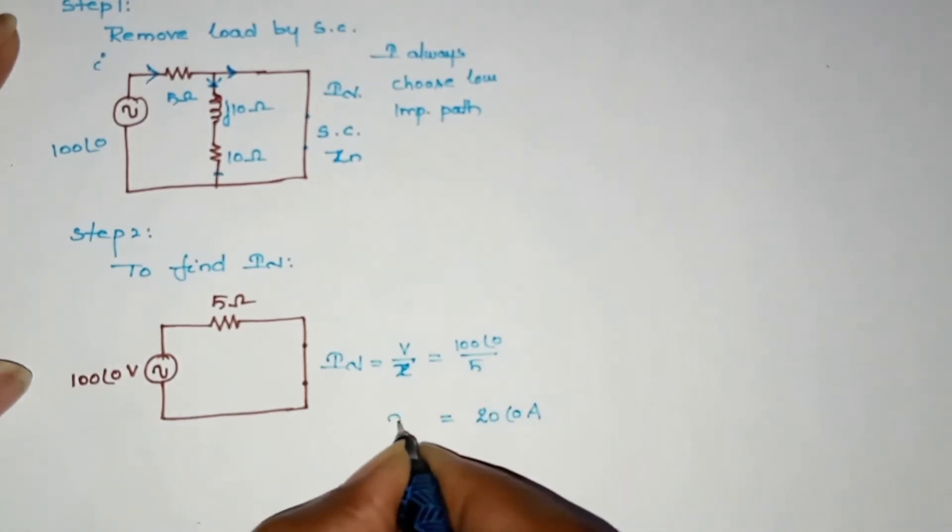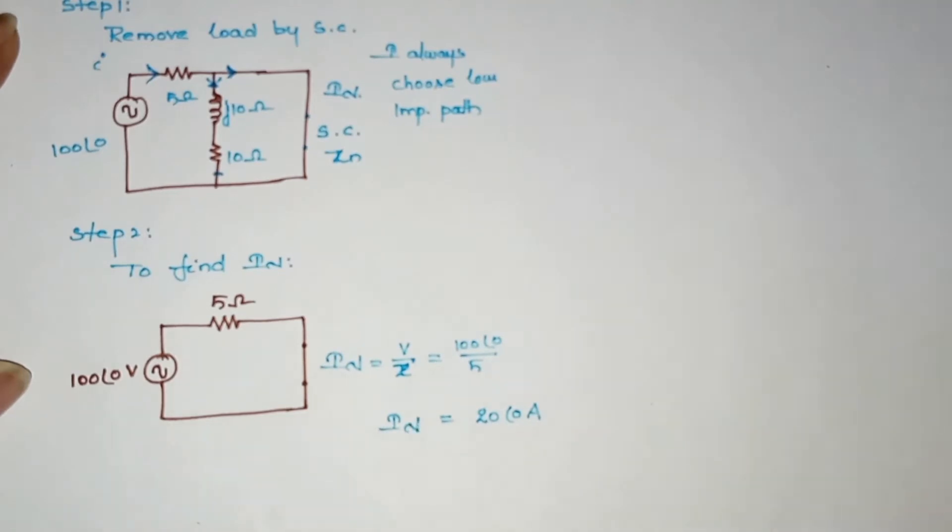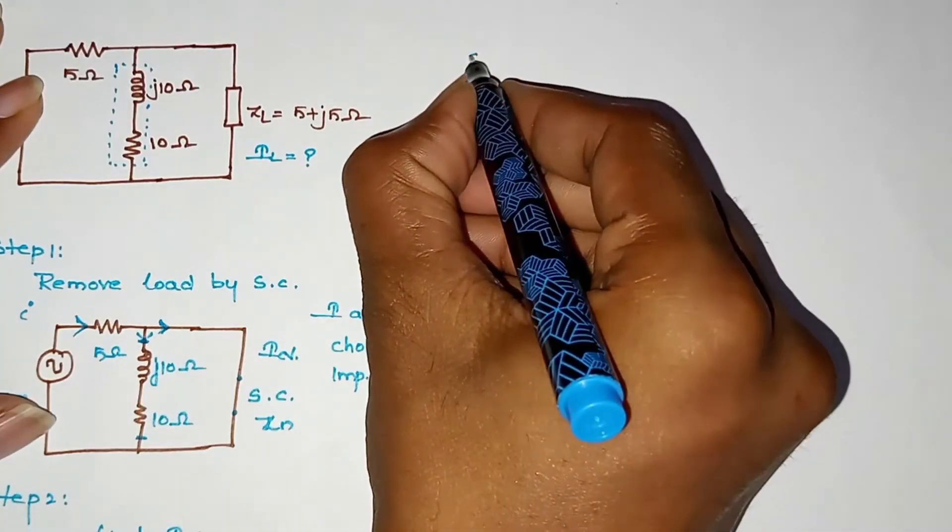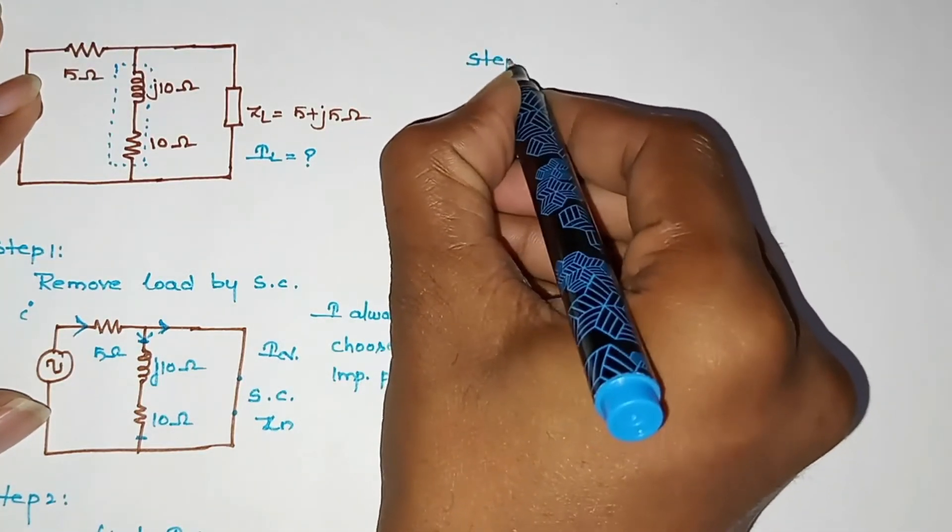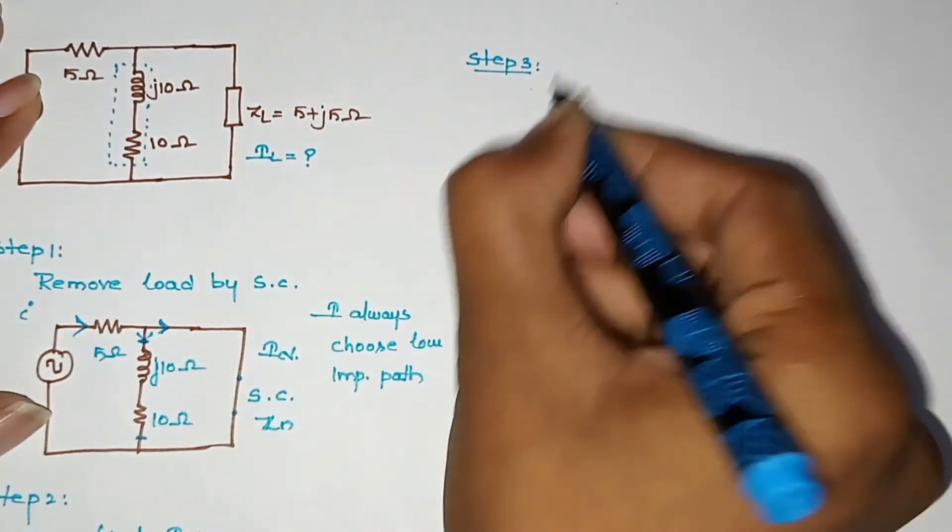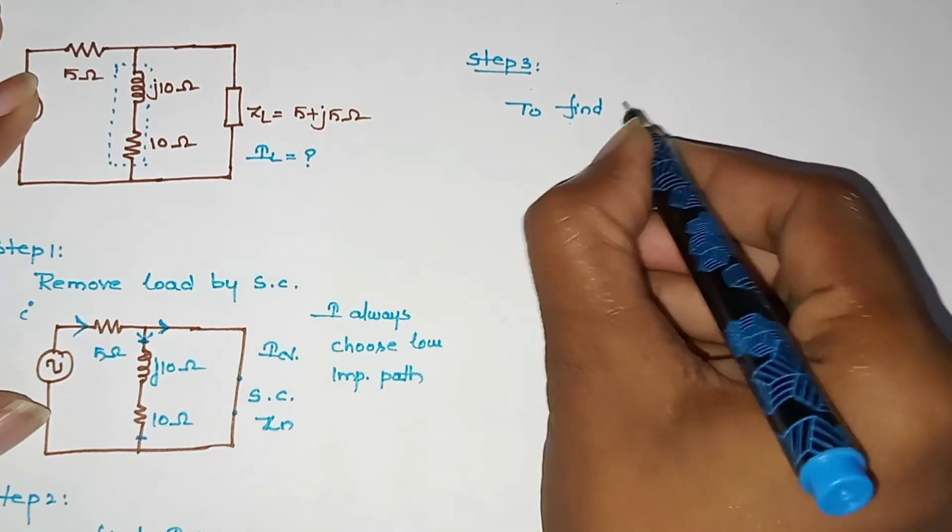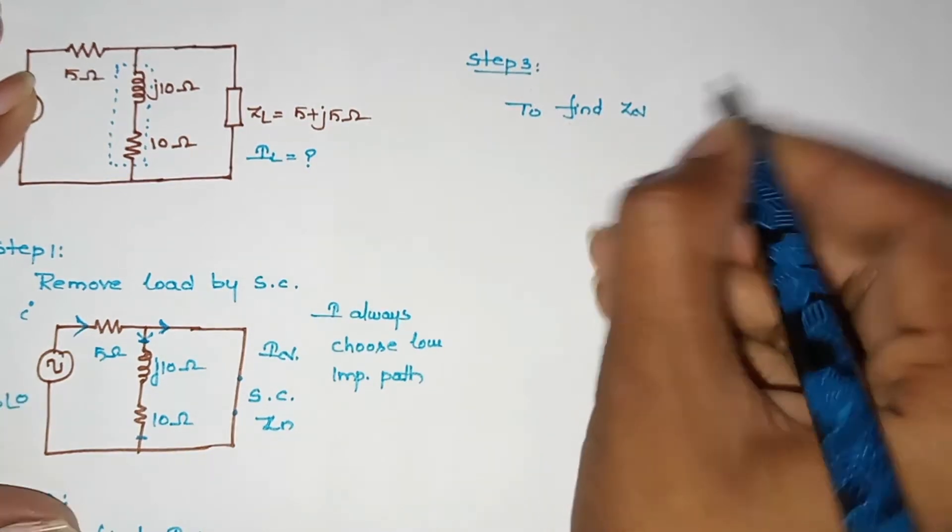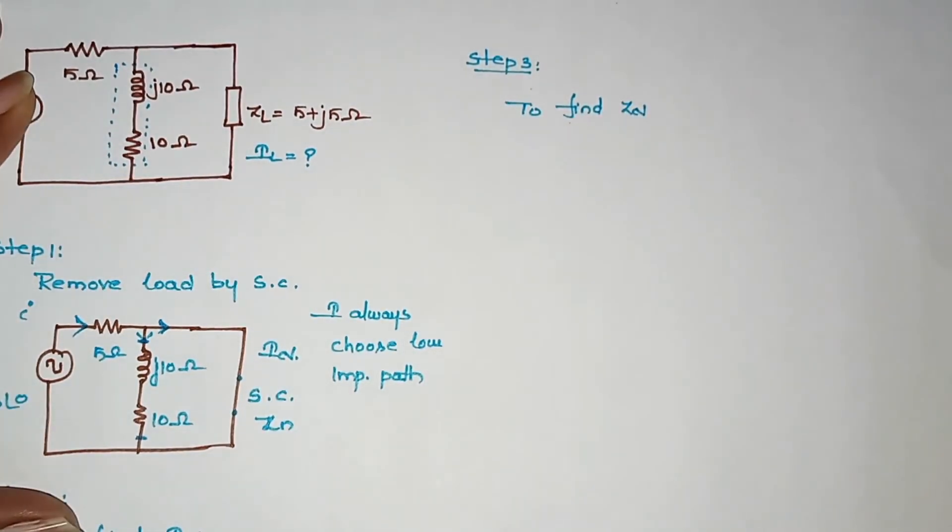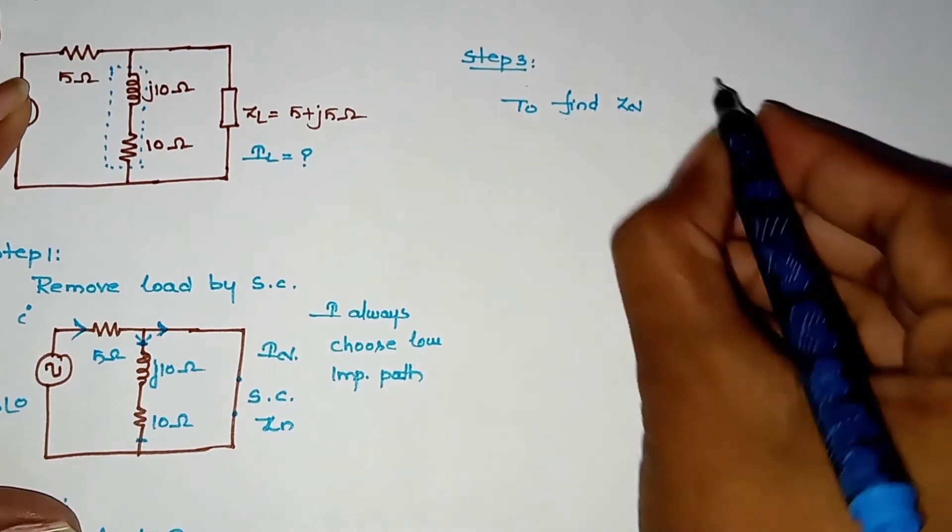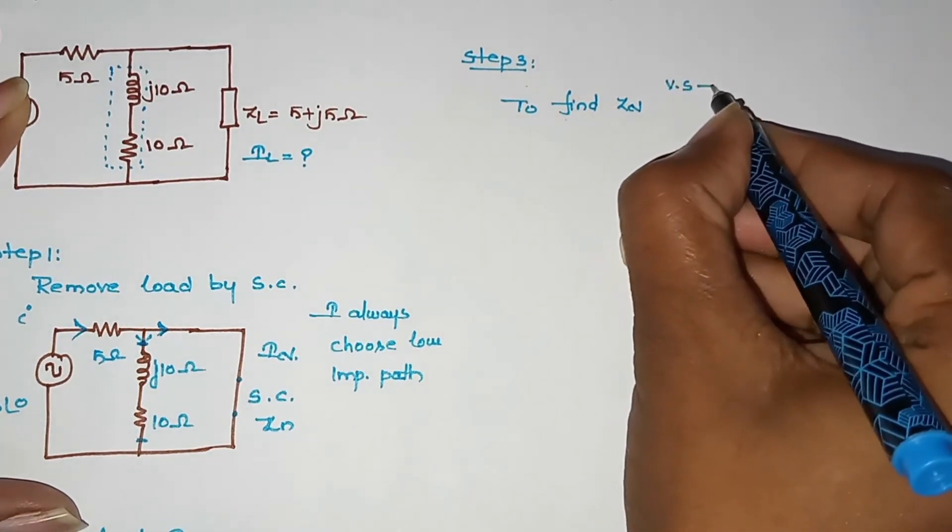Now we have IN value, here we have IN value. Step 3: we have to find ZN. To find ZN.